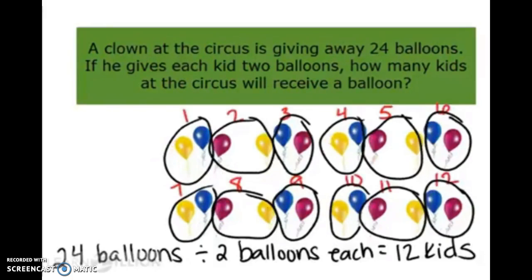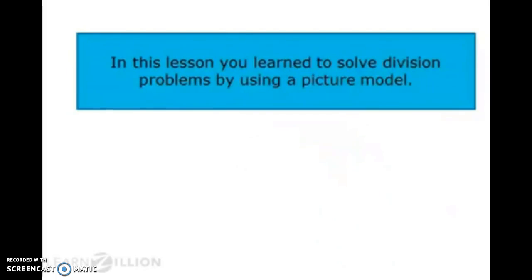So now I can say that 24 balloons divided by two balloons each is equal to 12 kids. We have a total of 12 groups circled. In this lesson you learned to solve division problems by using a picture model.